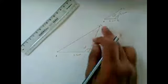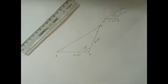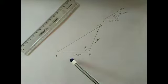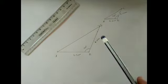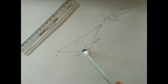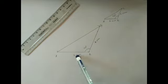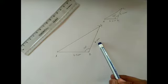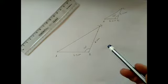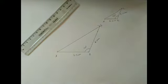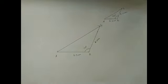ABC is our required triangle. This is how we construct a triangle when two sides and the angle between them is given. Since it is an isosceles triangle we get two equal sides. We can construct a scalene triangle also — in that case two different side lengths will be provided.